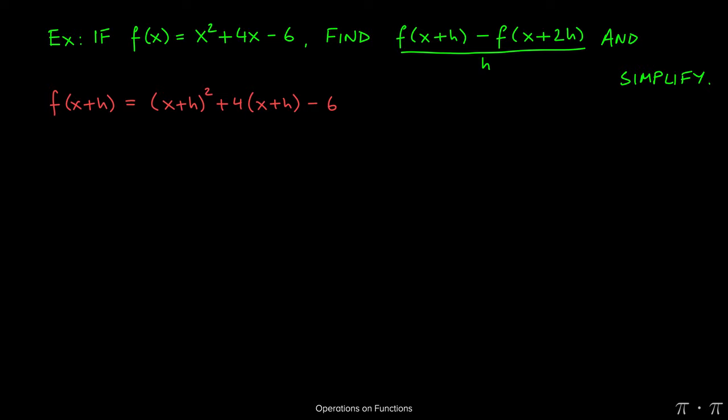That's what I did here: x plus h the quantity squared plus 4 times the quantity x plus h minus 6. We can clean this up by foiling out or distributing or using a special product formula on this first piece, which is going to give us x squared plus 2xh plus h squared. We can distribute the 4: 4 times x is going to give us 4x, 4 times h gives us 4h, minus the 6.